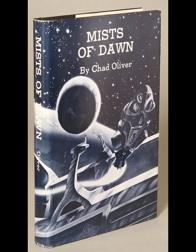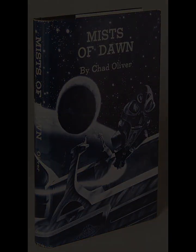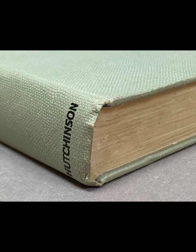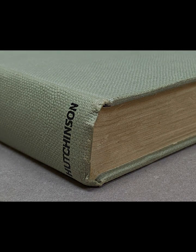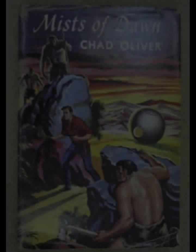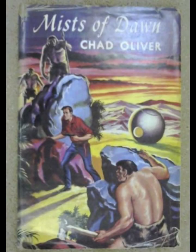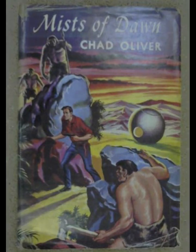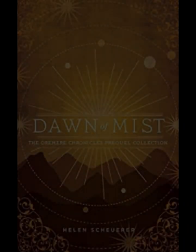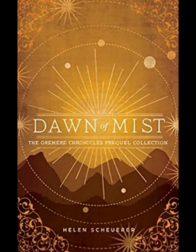One of the novel's key themes is the idea of evolution and change. The mist on the alien planet has the power to alter perceptions and influence behavior, symbolizing the ways in which external factors can impact personal growth and development. This theme is reflected in the characters' journeys as they navigate the mist and confront their own inner demons. The novel suggests that evolution is not just a physical process but also a psychological and emotional one, driven by encounters with the unknown.